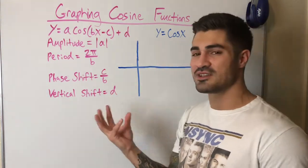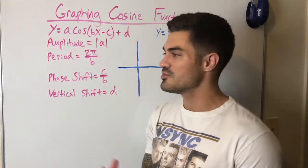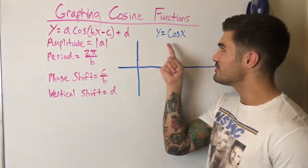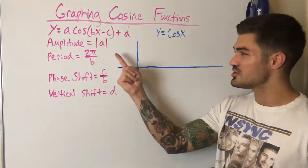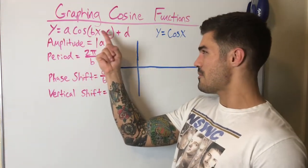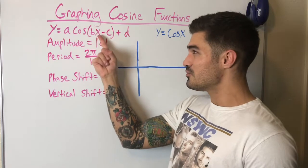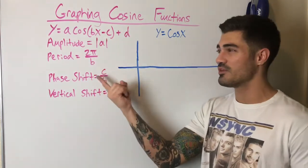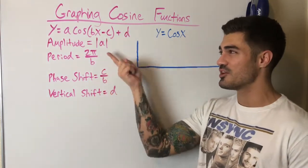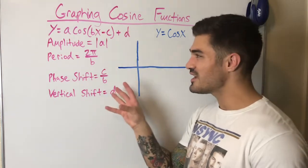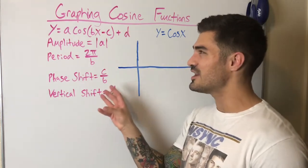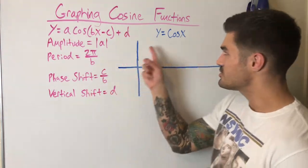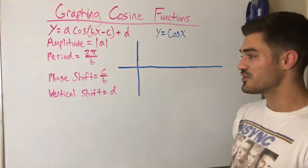The amplitude, period, phase shift, and vertical shift information is all the same, which is consistent between sine and cosine. Our period for the parent function is 2π, and when we have a number multiplied in front of x, we divide 2π by that number to find the new period. The strategy for graphing cosine and sine are the same, so let's graph the parent function.